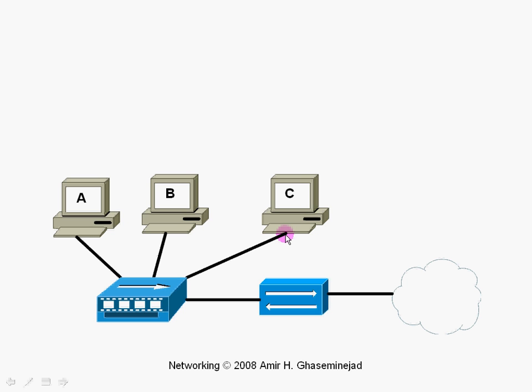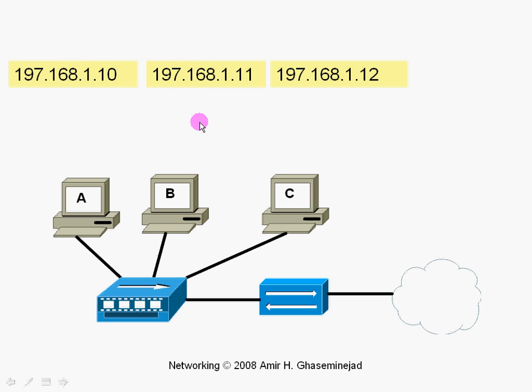The payload of the frame, most of the time these days, is an IP packet. And if computer A wants to send an IP message to computer C, then it needs to know the IP address of the destination and its own IP address. So we assign IP addresses: 197.168.1.10 to computer A, .11 to computer B, and .12 to computer C.